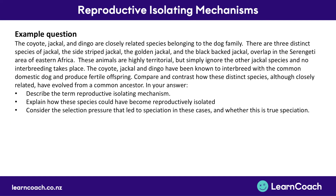Let's look at an exam question involving the coyote, the jackal, and the dingo — closely related species belonging to the dog family. Looking more closely at the jackal, there are three distinct species: the sidestripe jackal, the golden jackal, and the black-backed jackal. They all overlap in the Serengeti area of eastern Africa and are highly territorial, but simply ignore the other jackal species with no interbreeding — meaning they must be different species. However, the coyote, jackal, and dingo have all been known to interbreed with common domestic dogs and produce fertile offspring, suggesting they may not be truly different species.